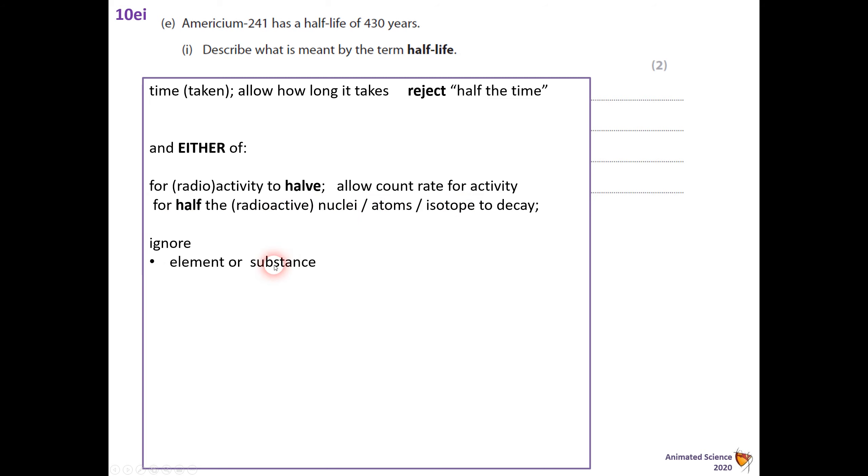Part D there, the diagram shows a cross-section for a smoke alarm. So there's my smoke alarm. In normal operation, the count rate measured by the counter is 100 counts per second. If the count falls below 80, the alarm's going to go off. Explain how rising smoke causes the alarm to sound.